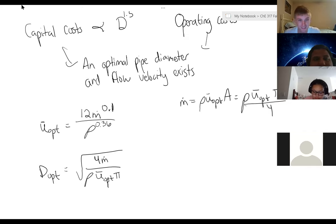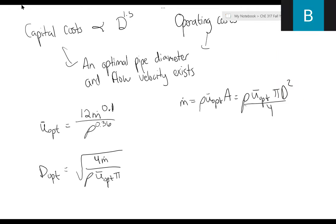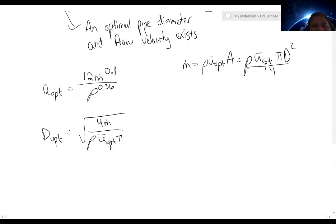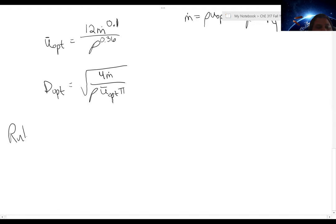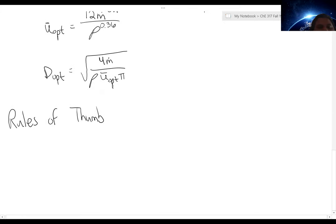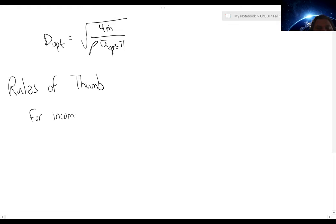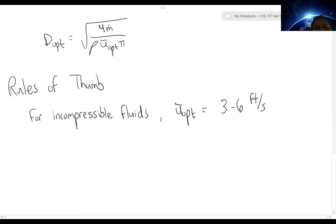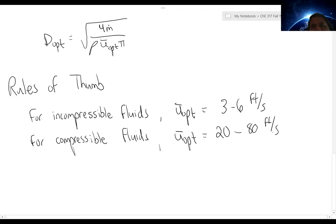In terms of situations where we really don't want to calculate these things, you can rely on some rules of thumb. For incompressible fluids, the optimal velocity will typically be between 3 and 6 feet per second.